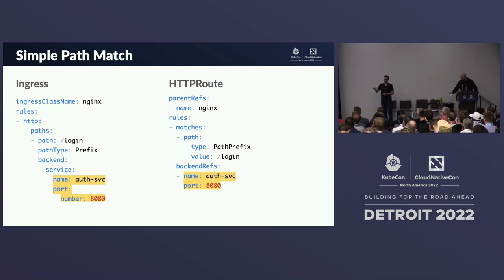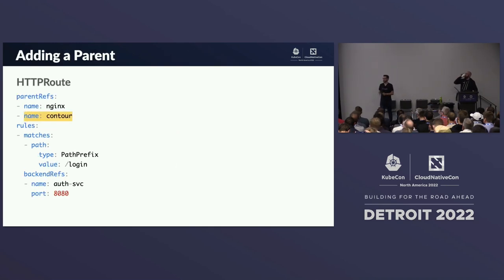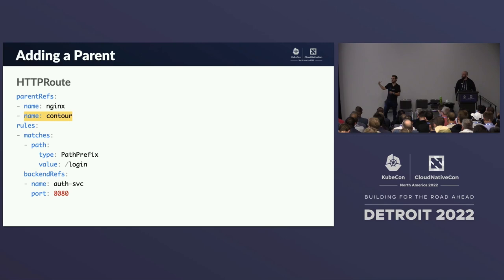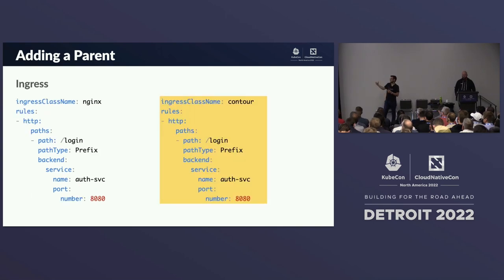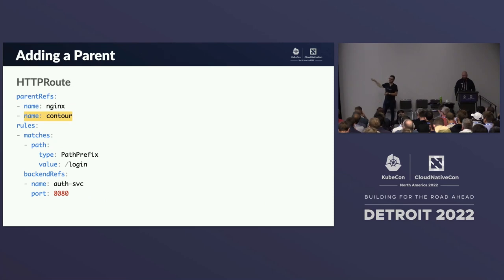There are a lot of similarities, but let's extend this example. Say we want to add another implementation — not just the nginx gateway but also the Contour gateway. In Gateway API, you just attach another parentRef. With Ingress, you need to create an entirely new Ingress resource. So instead of two Ingress resources, it's just a single HTTPRoute with one additional parentRef.